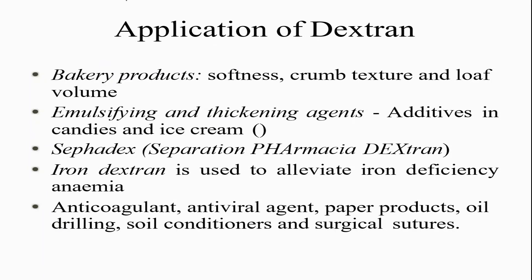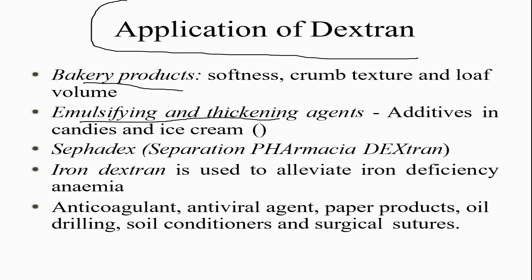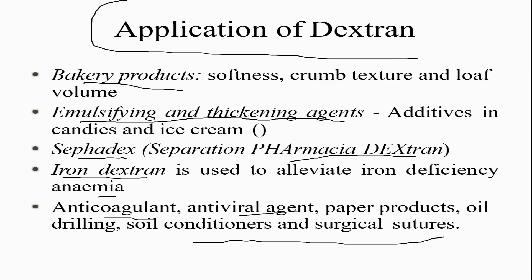Applications of dextran include use in bakery products, as emulsifying and thickening agents, in separation techniques in pharmacy, and as iron dextran to alleviate iron deficiency anemia. It is also used as an anti-coagulant, antiviral agent, in paper products, oil drilling, soil conditioners, and surgical sutures.